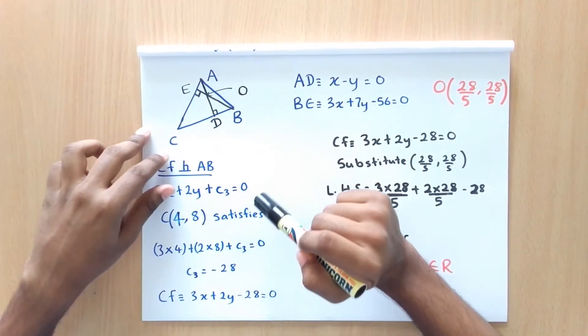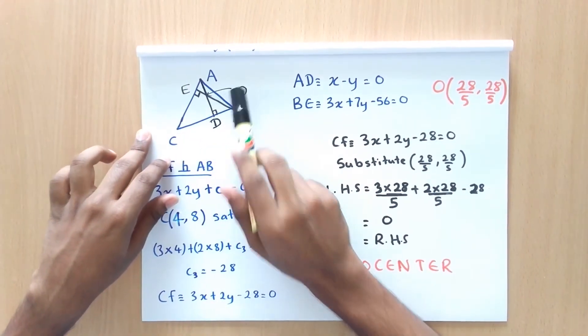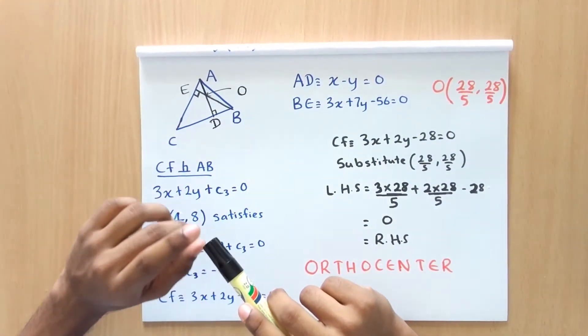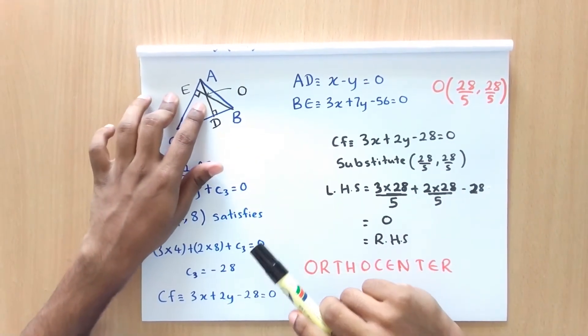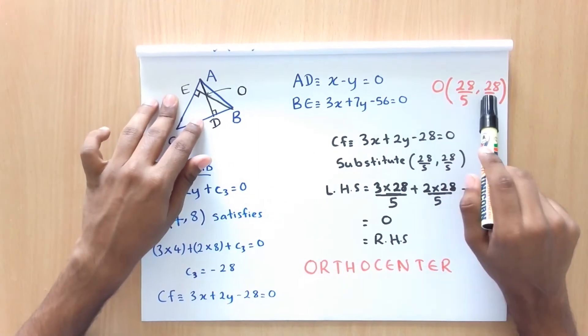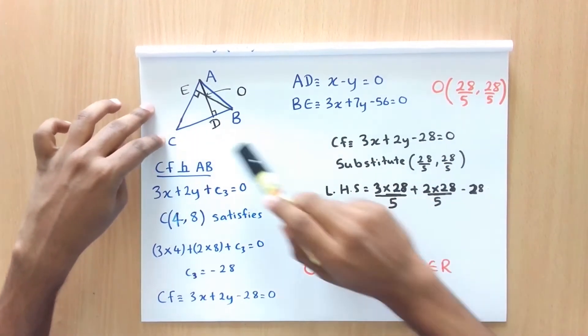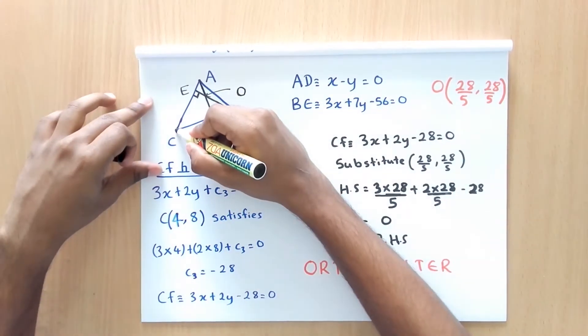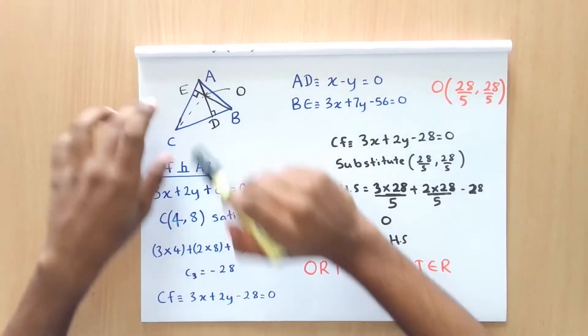Now these two altitudes will intersect at a certain point. Let's call this point O. We learned how to find the coordinates using simultaneous equations before. So the coordinates of O will be 28 over 5 and 28 over 5. Now we need to show that this third altitude also passes the same point O.